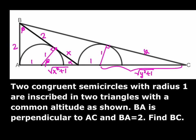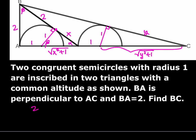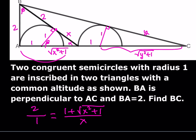Starting with the larger triangle with alpha: across from alpha we have 2. In the smaller one, across from alpha we have 1, so we have a 2-to-1 ratio. In the larger triangle, across from beta it's going to be 1 plus the square root of x squared plus 1. In the smaller one, across from beta is x.